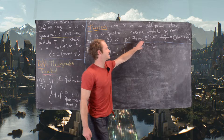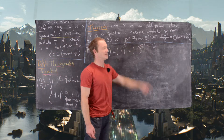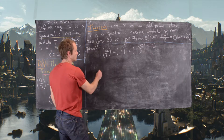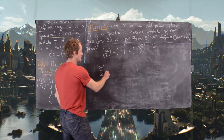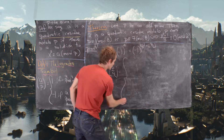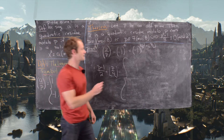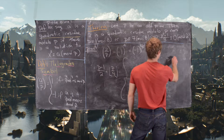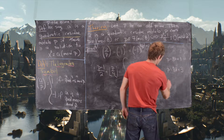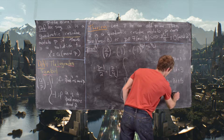We'll look at (p−1)/2 − ⌊p/4⌋ modulo 2 to extract its parity. We'll do this for all possible values of the prime mod 8: p of the form 8k+1, 8k+3, 8k+5, and 8k+7.